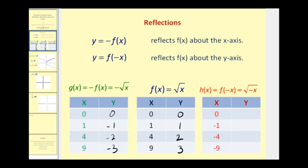Now if we let h of x equal f of negative x, this would equal the square root of negative x. Remember, this radicand must be greater than or equal to 0 to take the square root of it. So if we change the sign of the x-coordinates — if we change the sign of our input x — it would make our radicand either positive or 0, so we'd have 0, 1, 2, and 3. Since we changed the sign of the x-coordinates, it would reflect it across the y-axis.